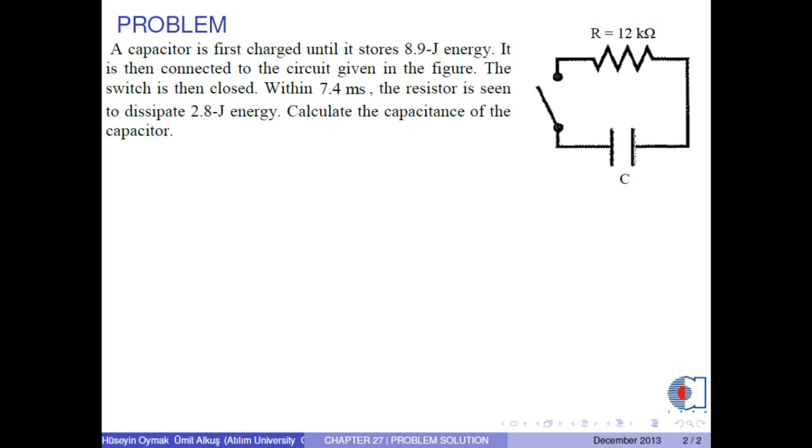A capacitor is first charged until it stores 8.9 Joule energy. It is then connected to the circuit given in the figure. The switch is then closed. Within 7.4 ms, the resistor is seen to dissipate 2.8 Joule energy. Calculate the capacitance of the capacitor.